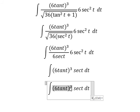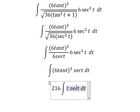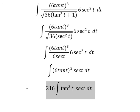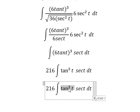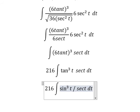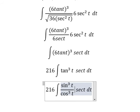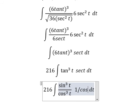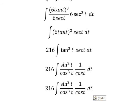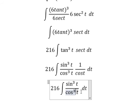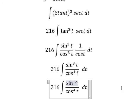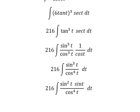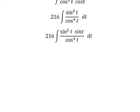We need to expand this. We have 216 and we have 10t to the power of 3. This is replaced by sine t to the power of 3 over cosine t to the power of 3. Secant of t is replaced by 1 over cosine t. Then cosine t and cosine t to the power of 3 gives cosine t to the power of 4. This is replaced by cosine t to the power of 4 times sine t squared, multiply by sine t.